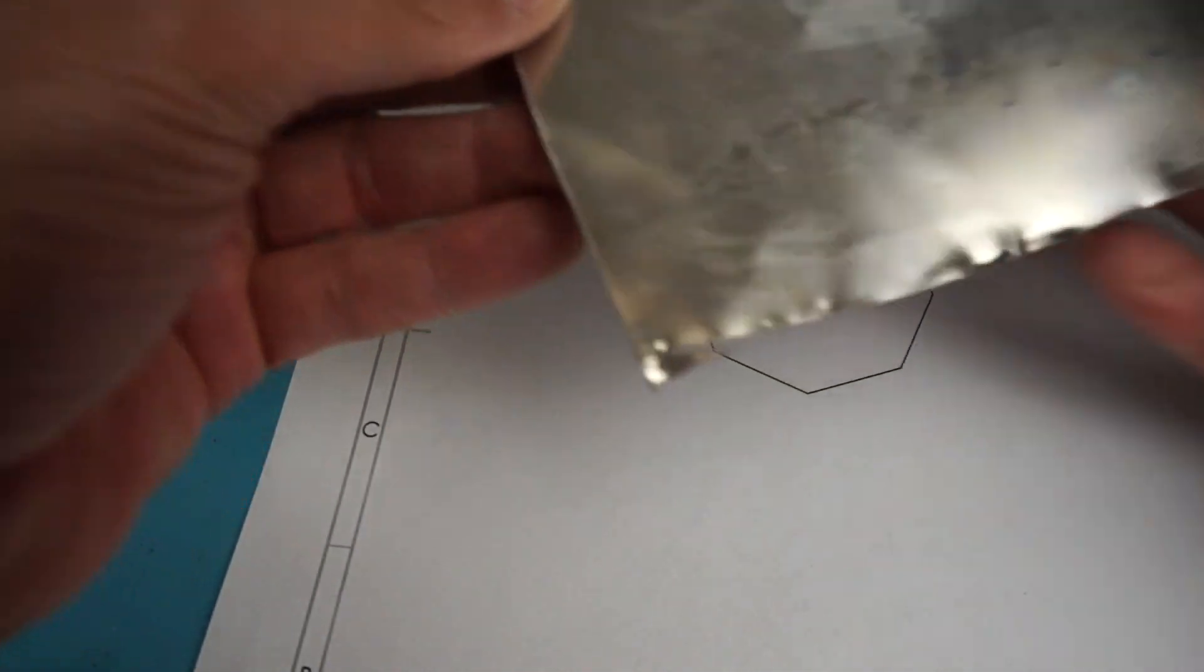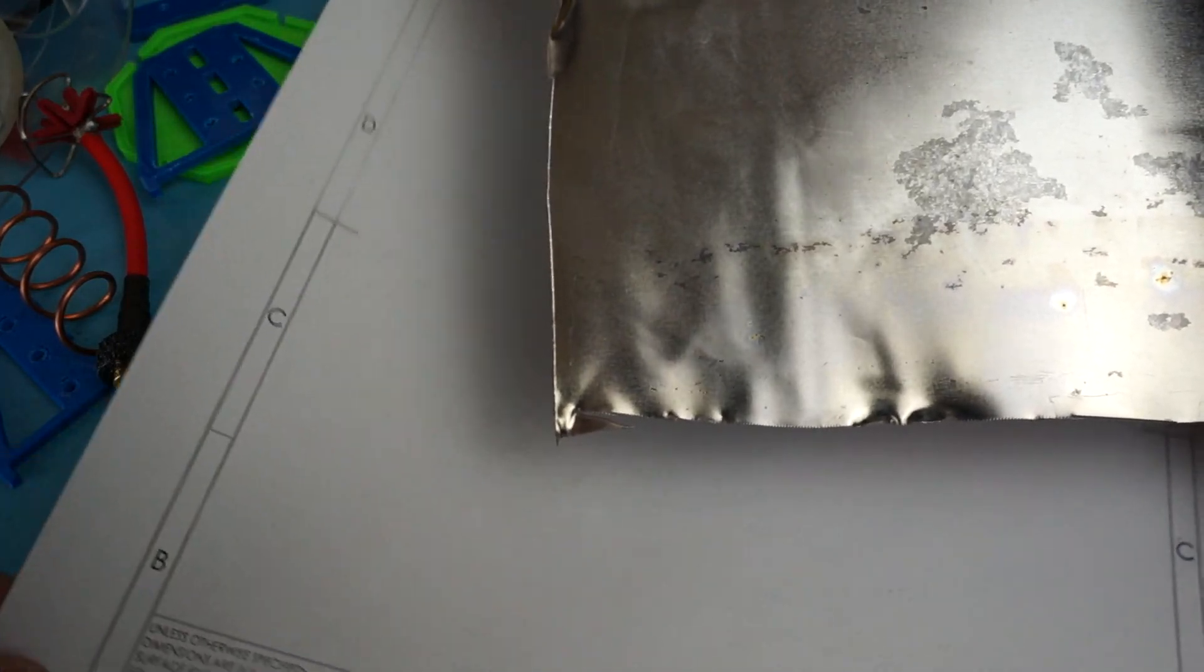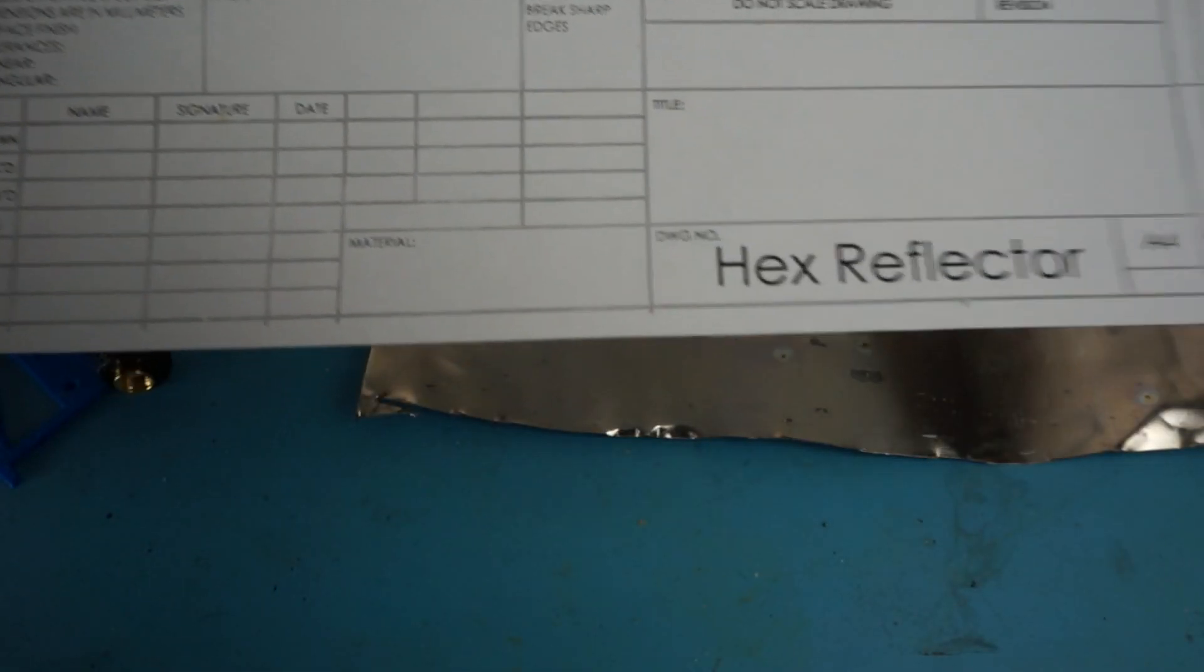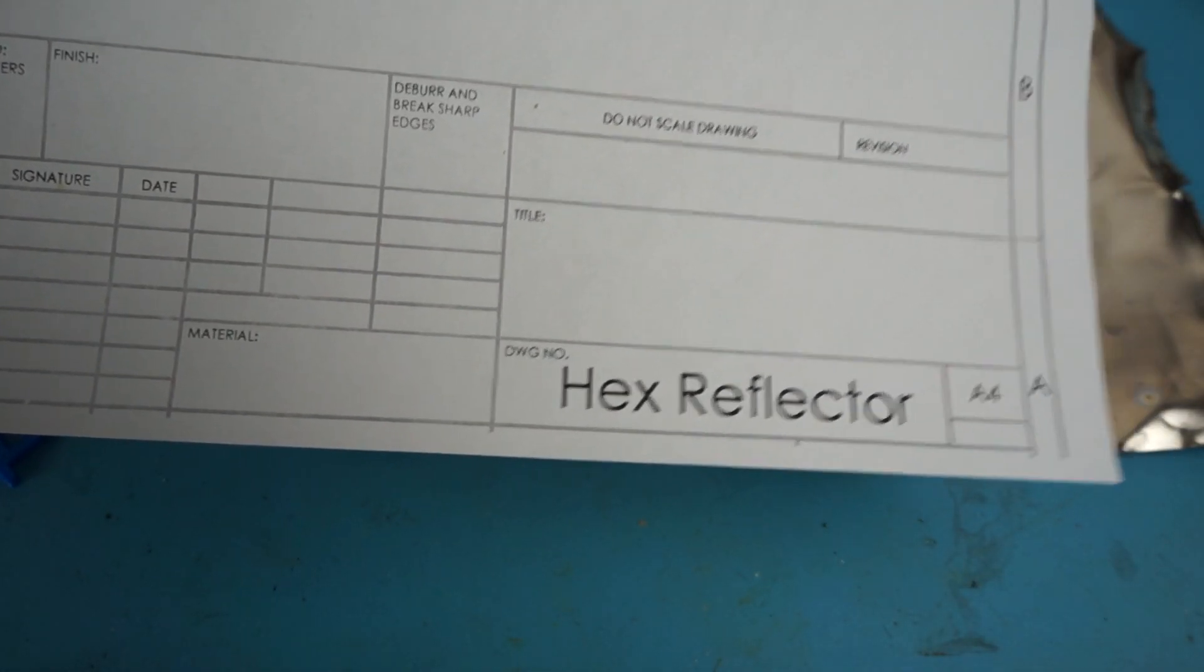Enough of the warnings. I'm going to use an old can. I'm going to recycle a can. The first thing is I need a template. I printed out this hex reflector.